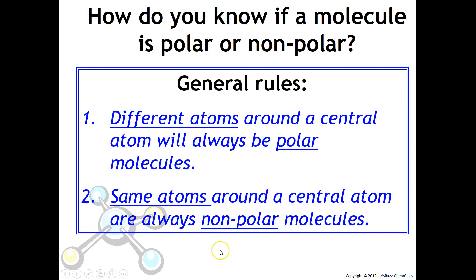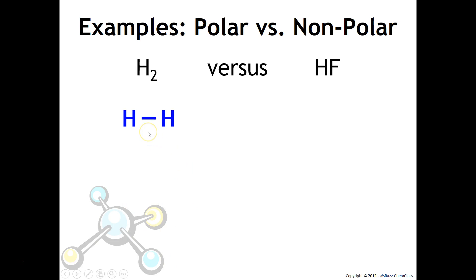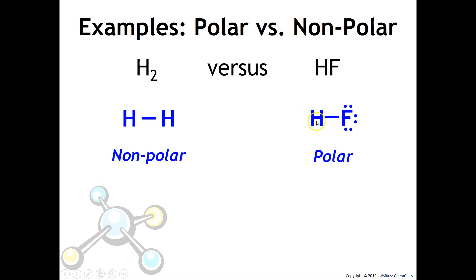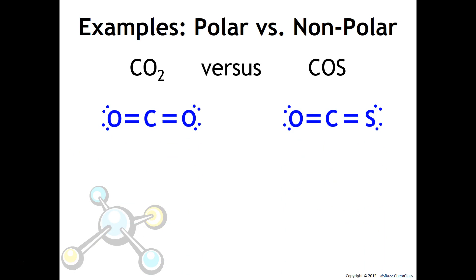Here are the general rules — they work for most things we cover in this class. If you have different atoms around a central atom, it will be a polar molecule. If you have the same atoms around the central atom, it will always be nonpolar. For example, H2 is nonpolar, while HF is polar because the two different atoms each have a different attraction for electrons.